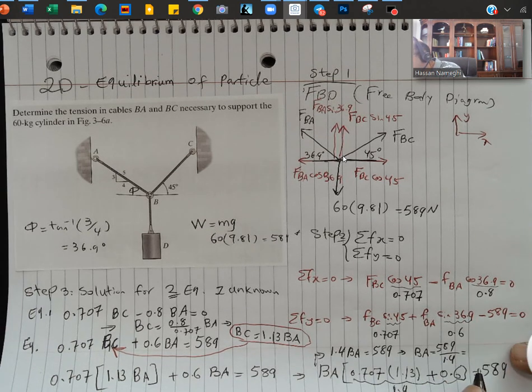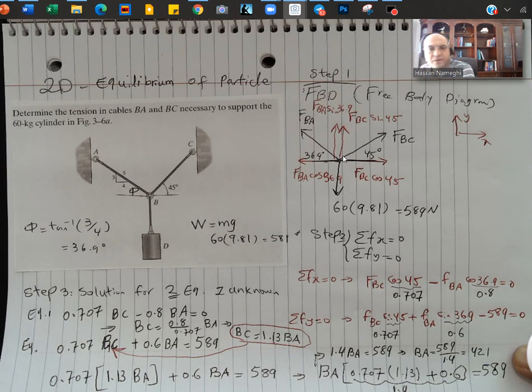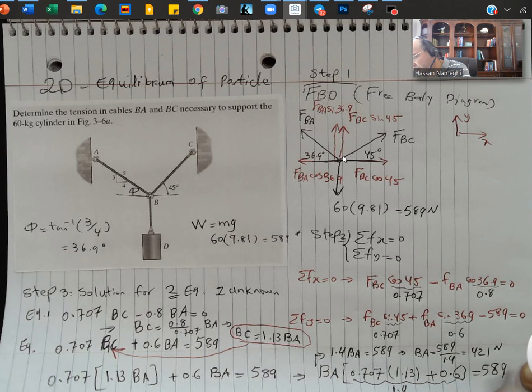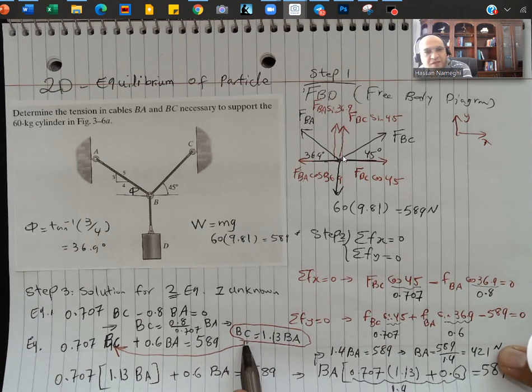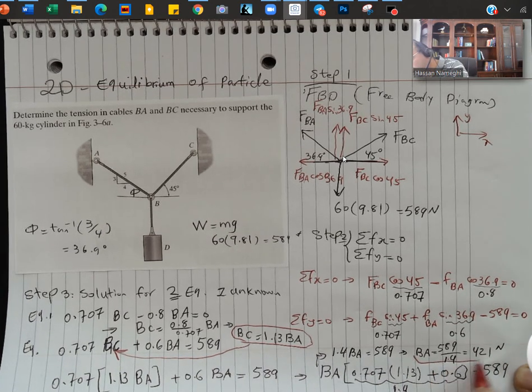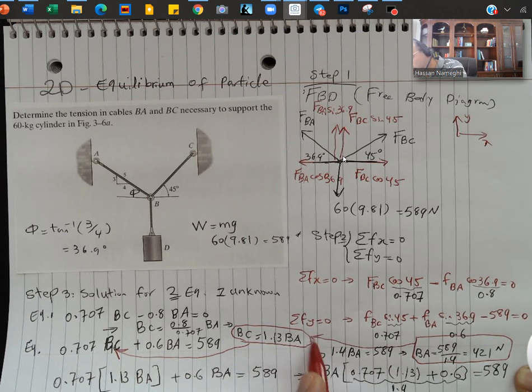The answer for this is 421 newtons. So we found the force BA or FBA. Now I'm going to find force FBC or BC. So once I found 421 from here, I can substitute it in this equation to find BC.